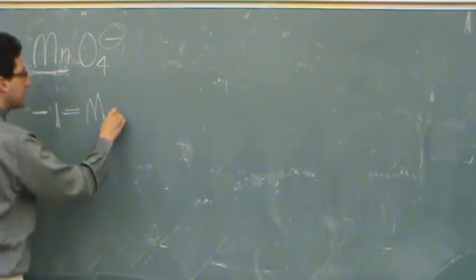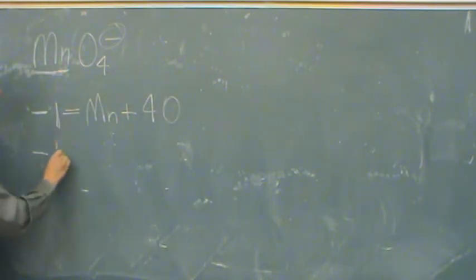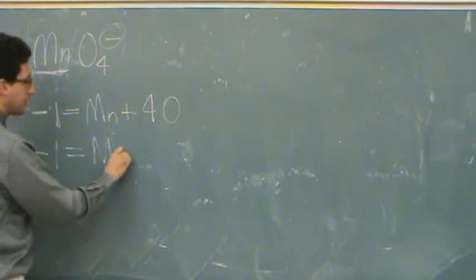The overall charge is right here, minus 1. So minus 1, and our other example is 0. Minus 1 equals manganese plus 4 oxygens. So minus 1 equals manganese, which is the one we want to know.